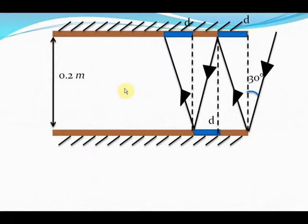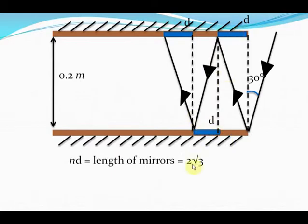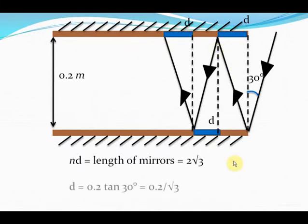That means when the ray has had N reflections, it will cover a total distance of N×D — because for one reflection it covered D, for the second it covered 2D, for the third it covered 3D. So N×D equals the length of the mirrors, where N is the number of reflections before the ray leaves the two-mirror system. So N×D = 2√3, since the mirror length is given as 2√3 meters. We know that D = 0.2·tan30° because the separation is 0.2 meters and the angle is 30 degrees. So D = 0.2/√3, since tan30° = 1/√3. Substituting the value of D gives us the answer for N.